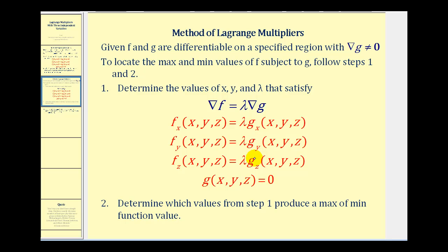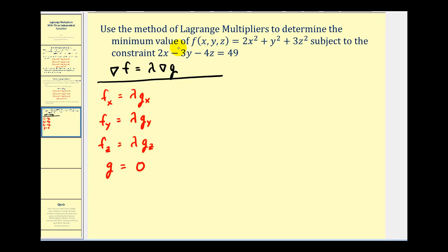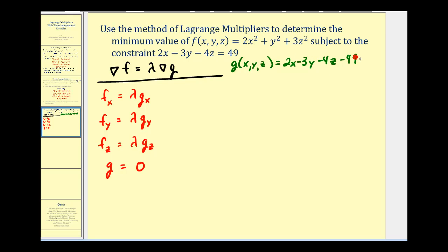Once we determine the values of x, y, z, and lambda, we determine which of these produce a max and min function value. Let's go and take a look at our example. So here we want to determine the minimum function value of f, subject to two x minus three y minus four z equal to forty-nine. So the first thing we should do is recognize that g of x, y, z would have to be equal to two x minus three y minus four z minus forty-nine equals zero.